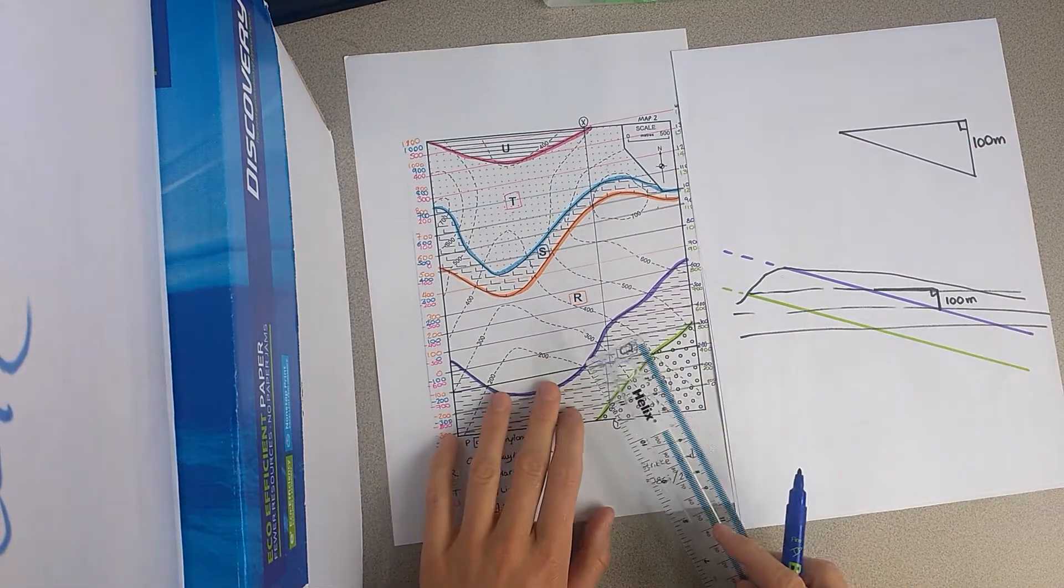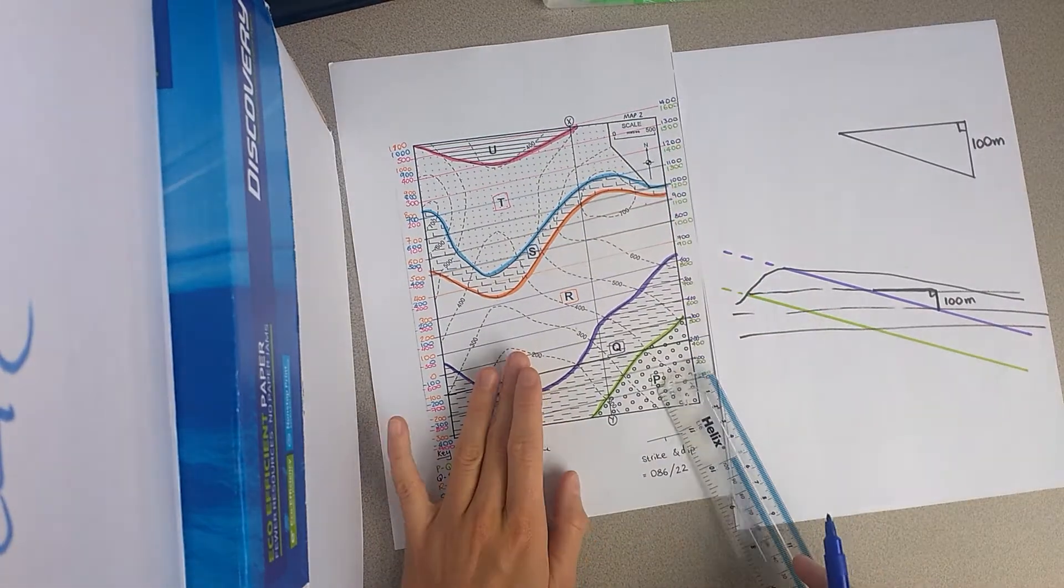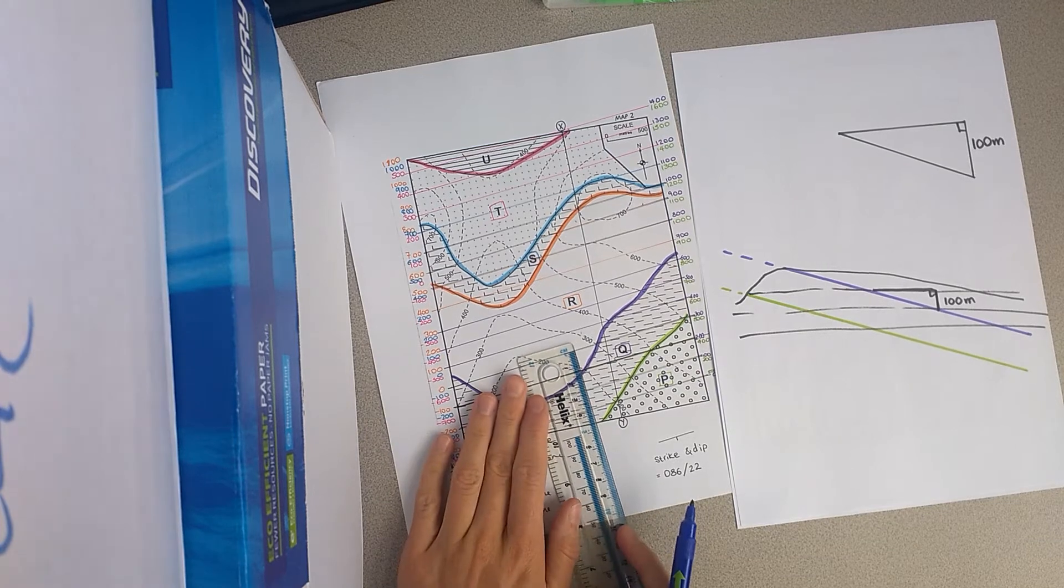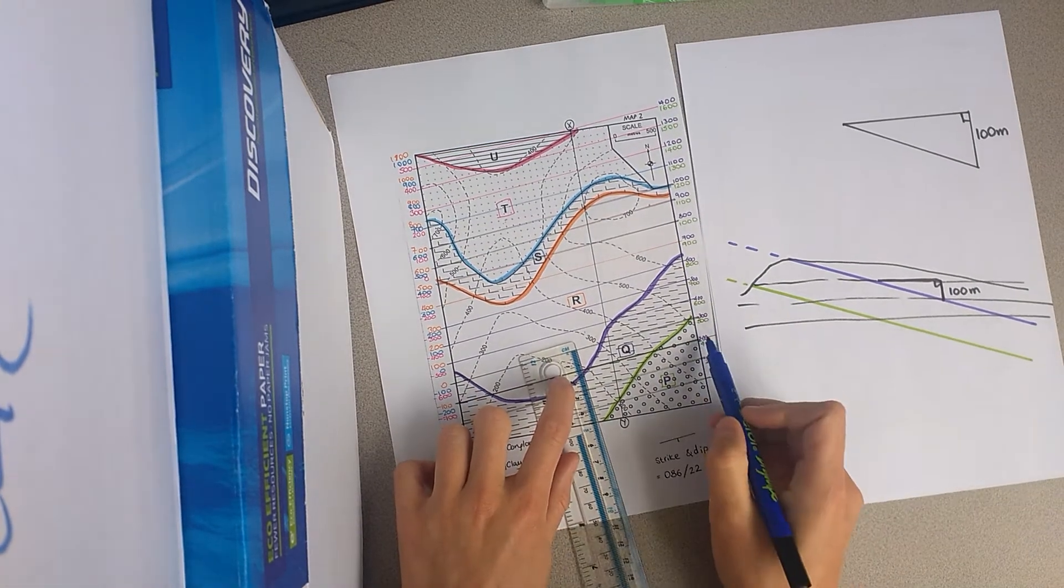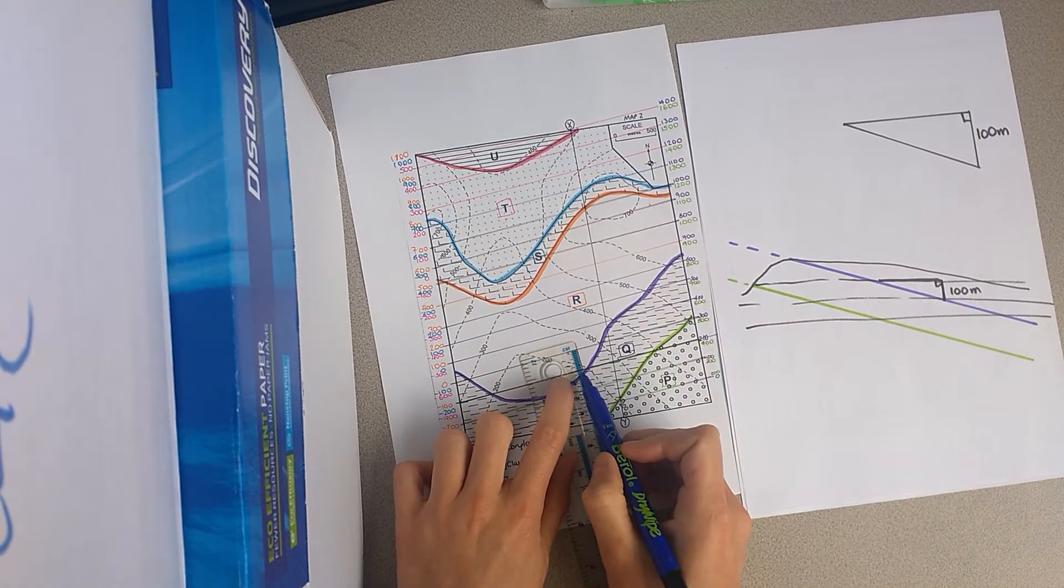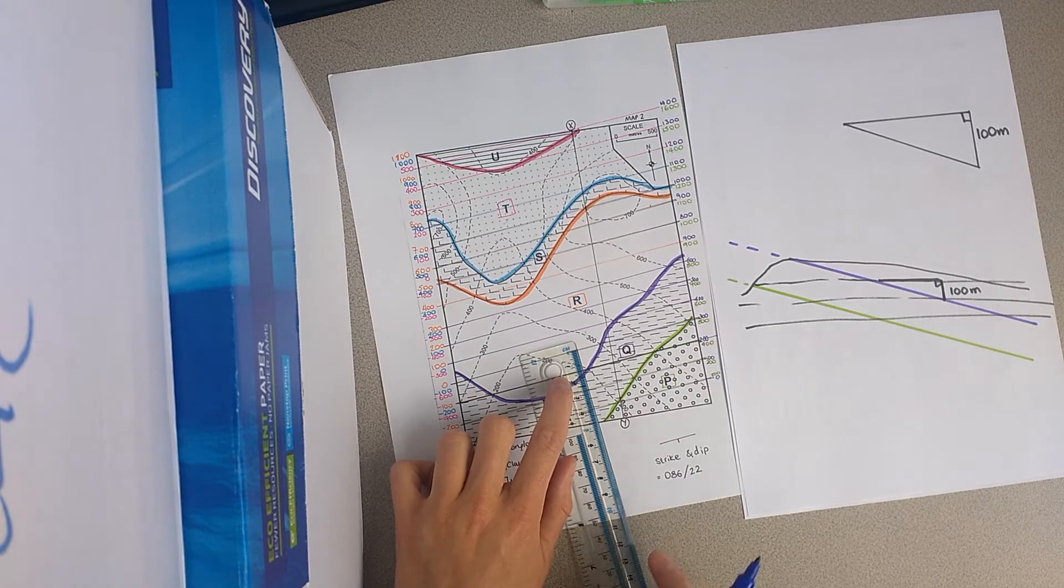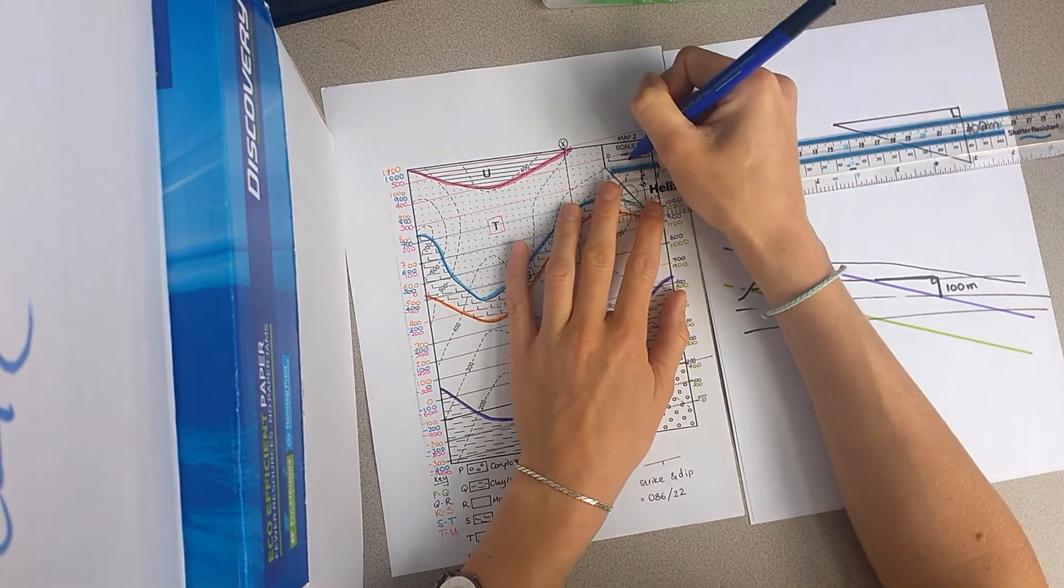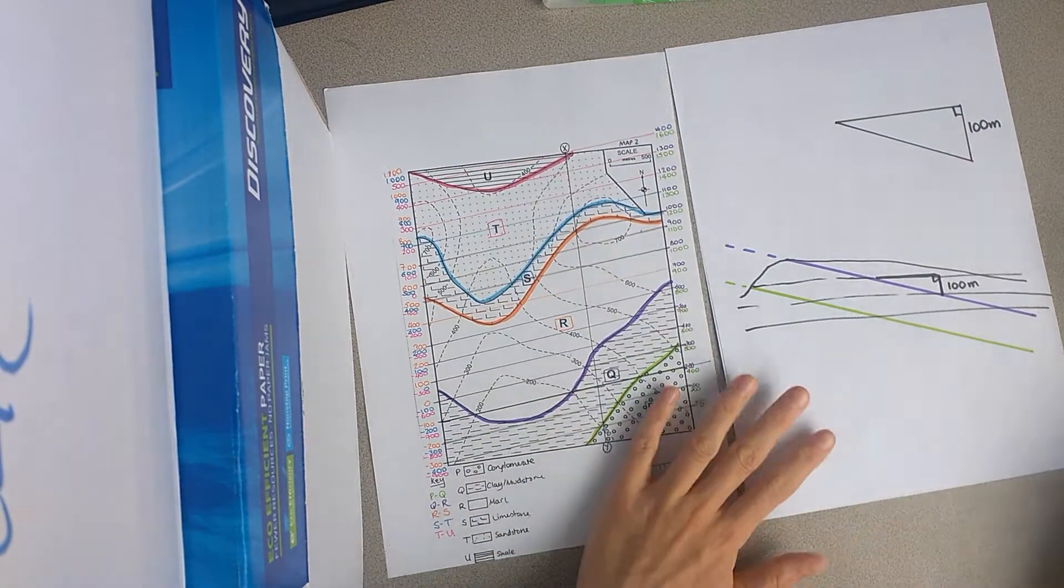So as I'm looking at this purple surface, well actually it doesn't matter because all of these are uniformly dipping, so you should be able to measure anywhere. But if you measure at 90 degrees to your structure contour line, between these two lines, for 100 metres vertical distance, you can see I've got 1.25 centimetres, which when we look at our scale bar is exactly halfway along our scale bar, so that is 250 metres.